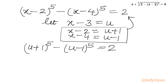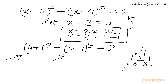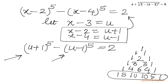Now I will use binomial expansion and Pascal's triangle to expand these two brackets. I need to know the expansion coefficients for power 5. Using Pascal's triangle: for power 3 it is 1 3 3 1, for power 4 it is 1 4 6 4 1, and for power 5 the coefficients are 1, 5, 10, 10, 5, 1. These coefficients we will use while expanding the brackets.